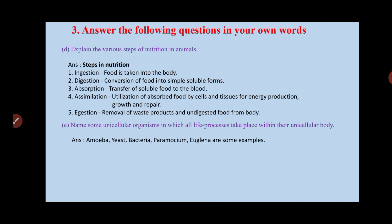Fourth is assimilation — utilization of absorbed food by cells and tissues for energy production. The simple substances absorbed into the blood are transferred to cells and tissues, which use them to produce energy for growth and repair of the body.